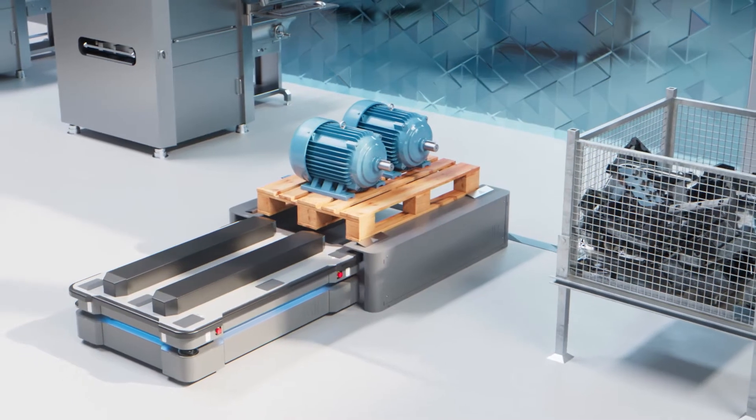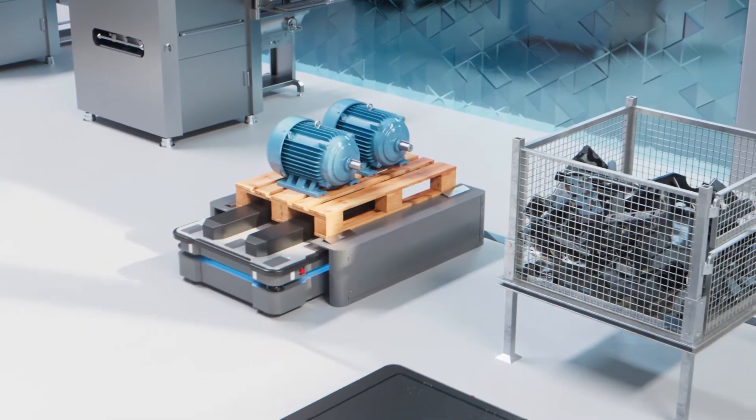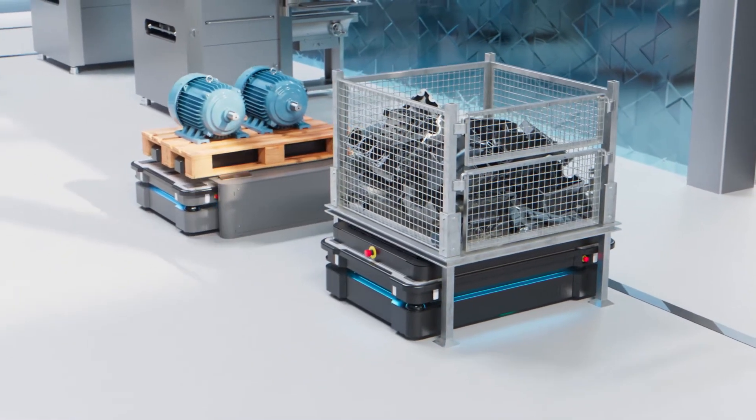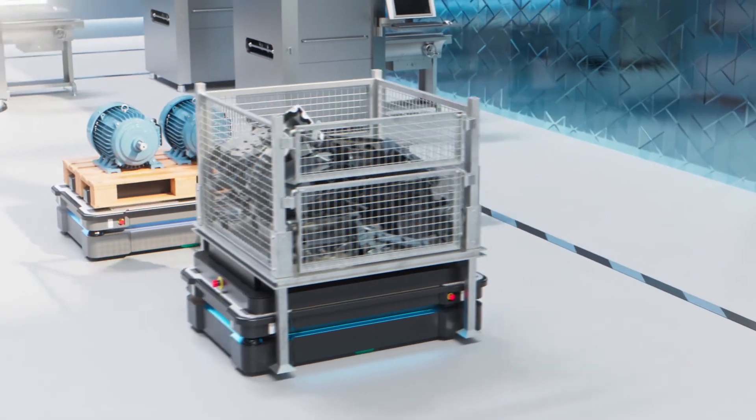The MiR 600 can carry payloads weighing up to 600 kilos, and the MiR 1350 can transport payloads up to an astonishing 1,350 kilos.